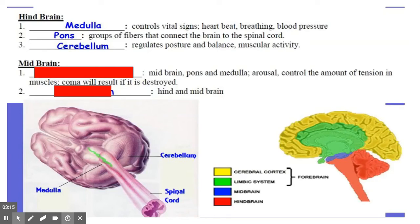Aside from the hindbrain, we have the midbrain. The midbrain contains the reticular formation. On our diagram below here, this little green line is supposed to illustrate the reticular formation. It works with the pons and medulla and is involved with helping us stay awake, arousal. It controls the amount of tension in the muscles. If this is destroyed, a coma will result.